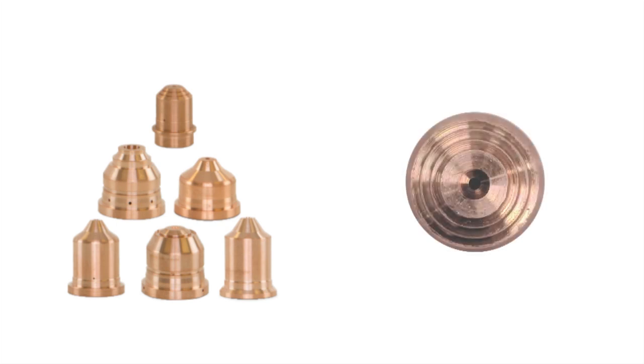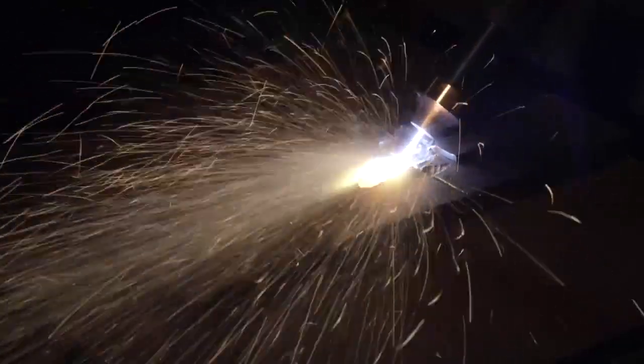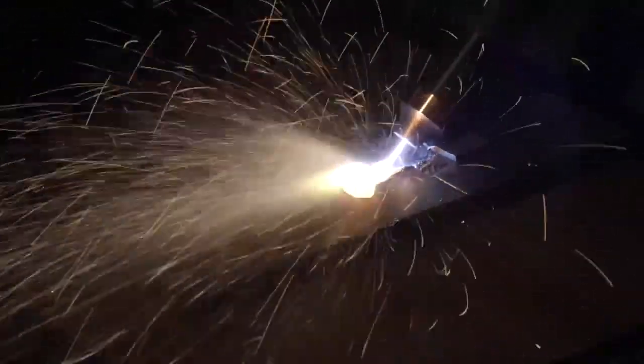For example, a gouging nozzle has a wider orifice which results in a wider, less-defined plasma arc. This is effective in gouging applications where the goal is to remove layers of metal as opposed to cutting through the metal.